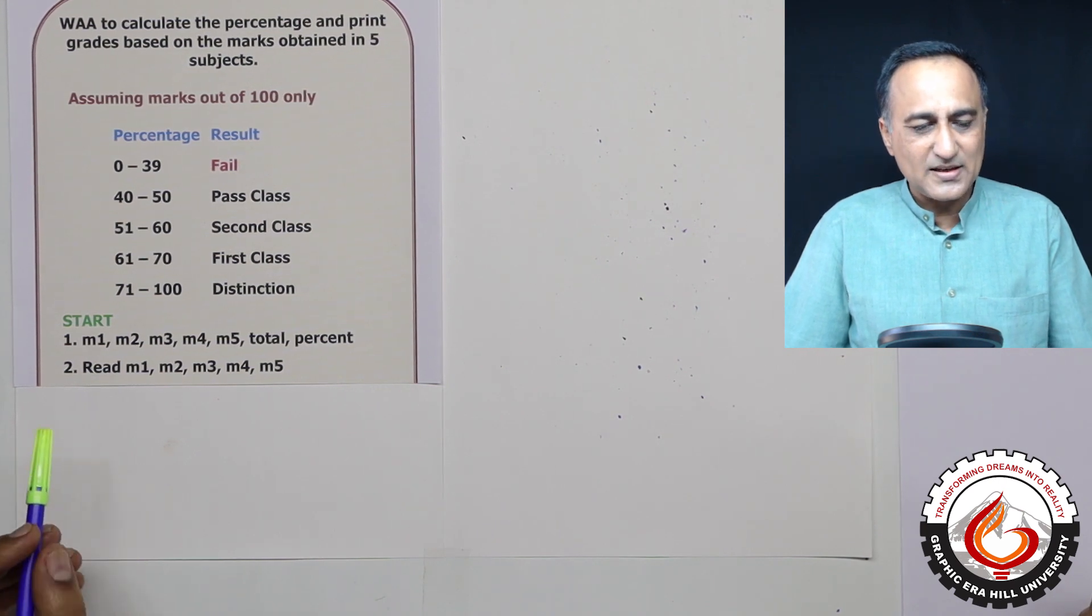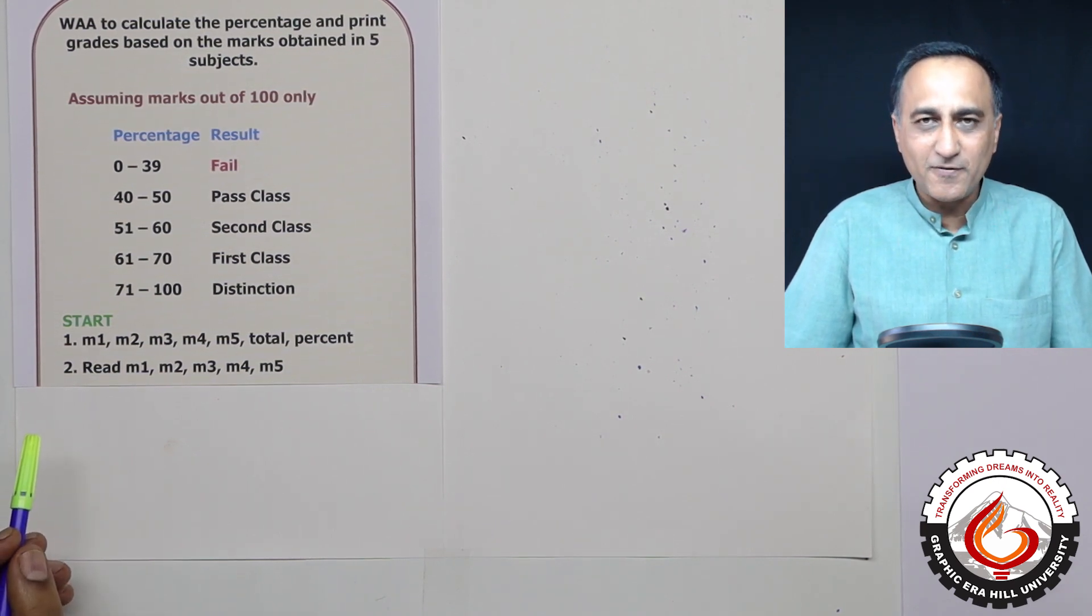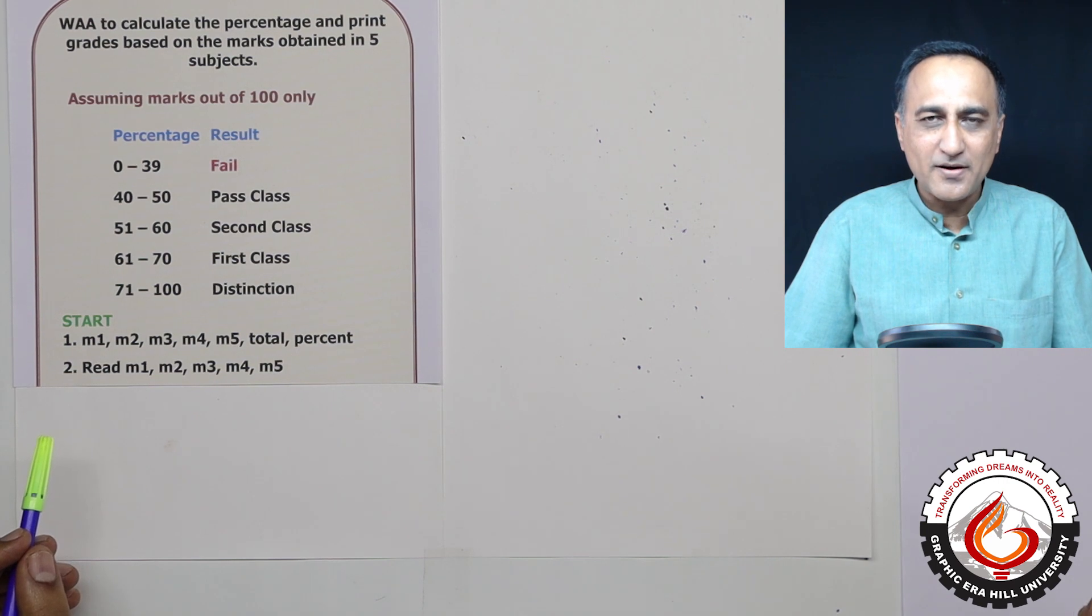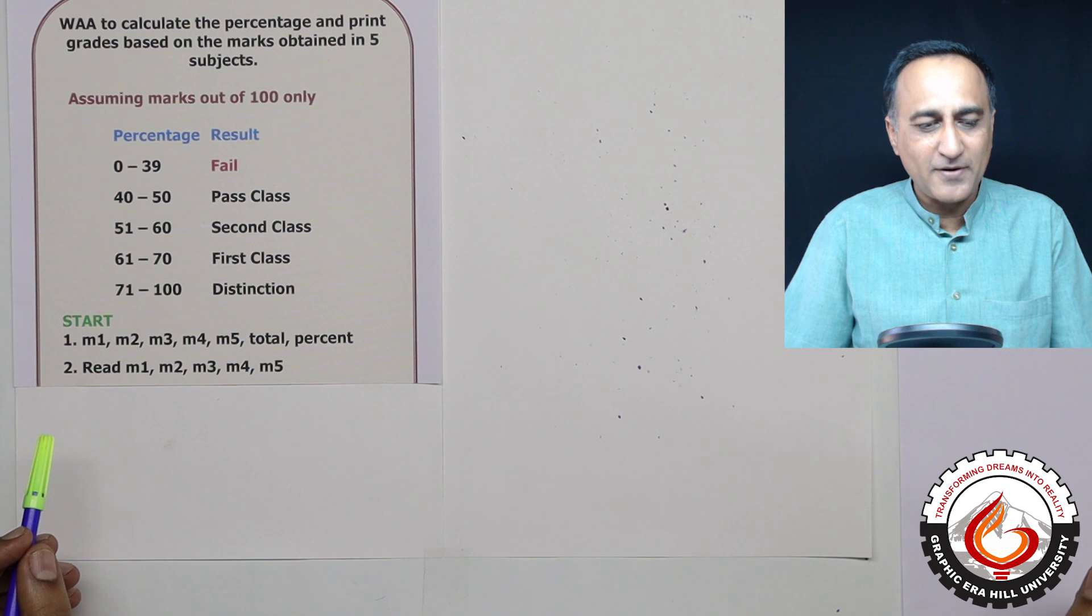The problem states: given the marks of five subjects, calculate the total, find the percentage, and then print out the grade of that candidate. So let us assume that the marks are out of 100 for each subject. So the total marks are not going to be more than 500.